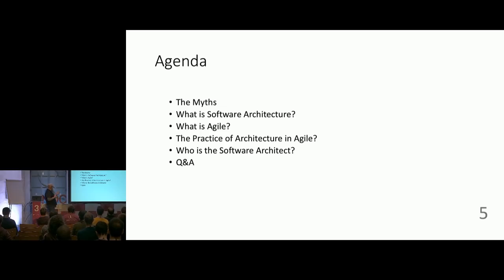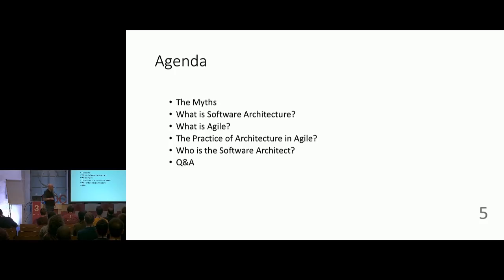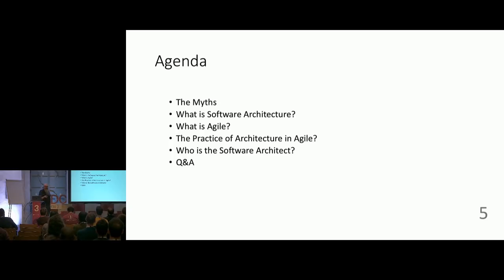I'll go into what software architecture actually is — what a number of more learned people think it's about — what agile is, and then talk about the convergence of the two. When we get into the myths we'll discuss why that has traditionally been seen as problematic, and then towards the end we'll talk about who is the software architect on your team. We probably won't have time for Q&A because there are 63 slides and this talk only lasts an hour.